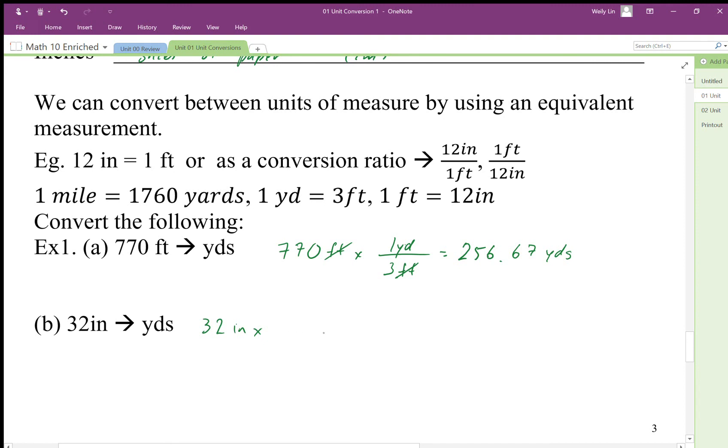I want to get rid of my inches, so I'm going to do 12 inches on bottom so they cancel out, and 1 foot on top. There's my ratio.